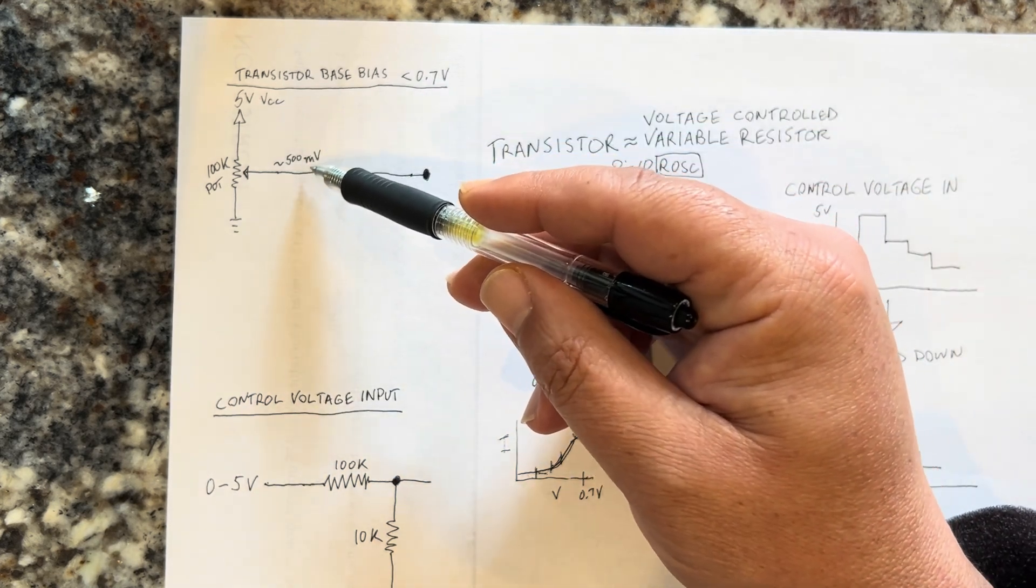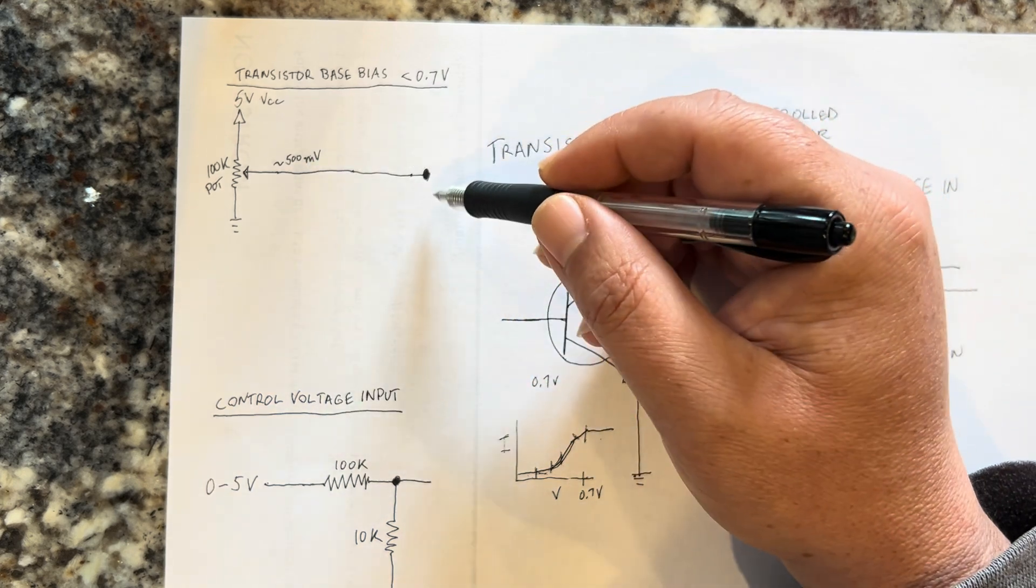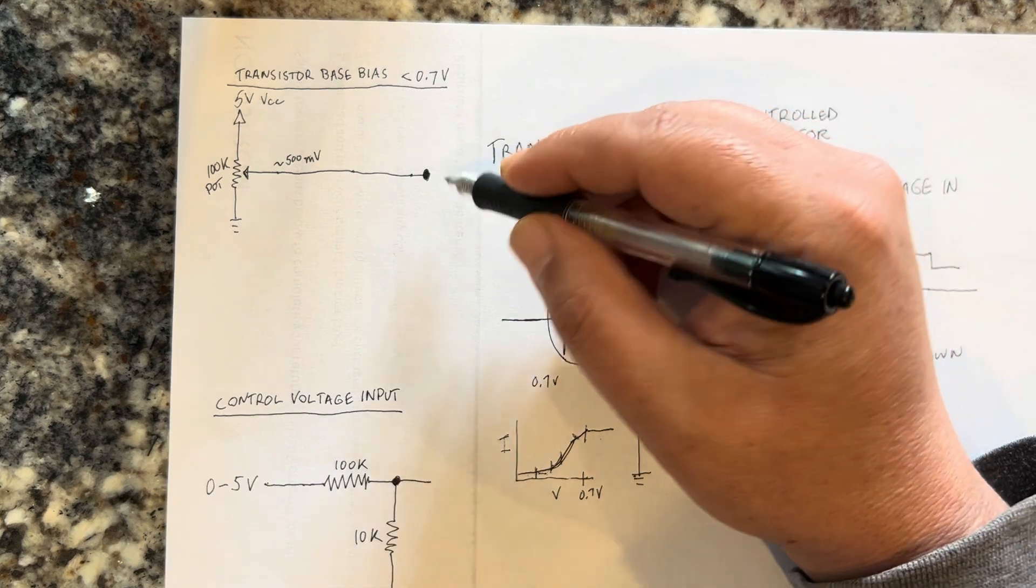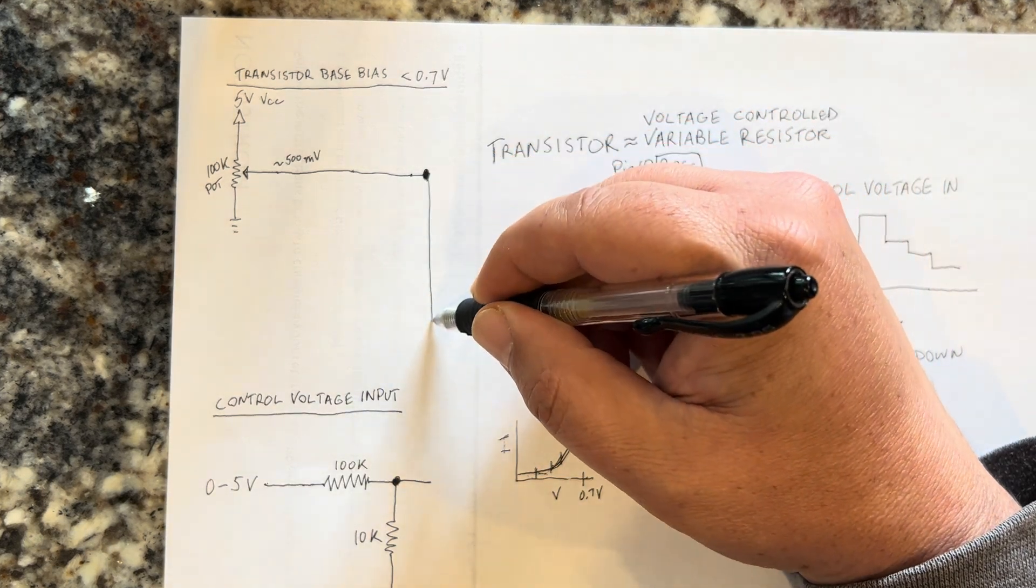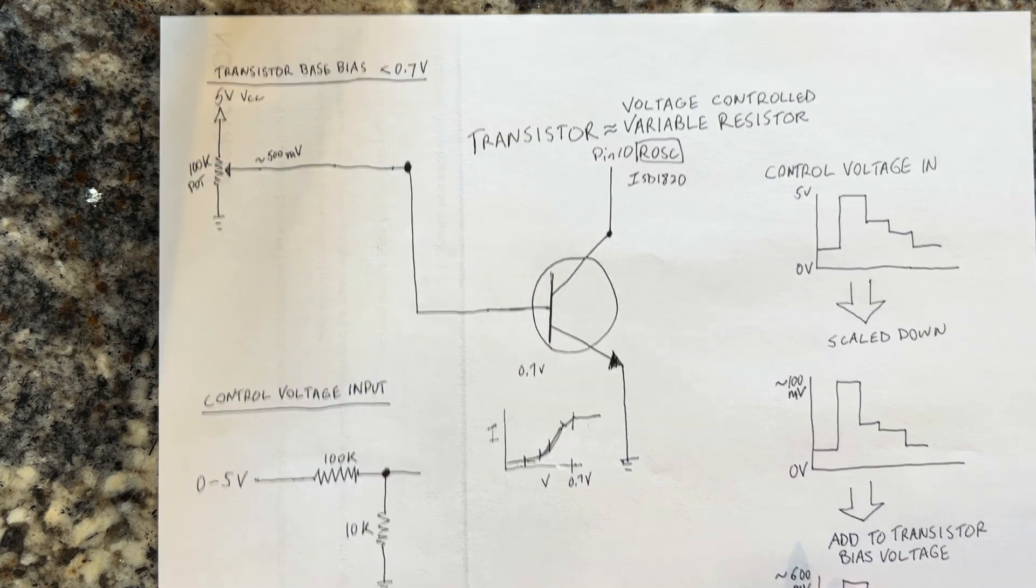Wired as a voltage divider between 5 volts and ground, you put it down to a relatively low level which you can measure out with a voltmeter, with a multimeter, at around 500 millivolts. That's your bias signal, and you connect that to the base of the transistor.